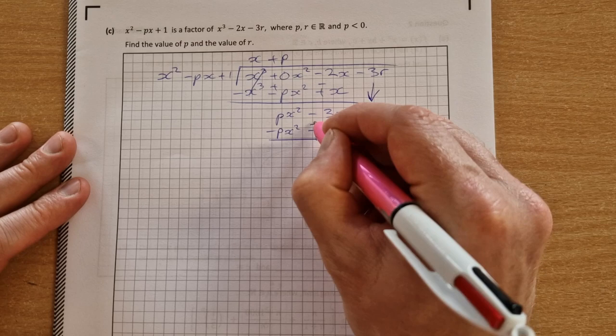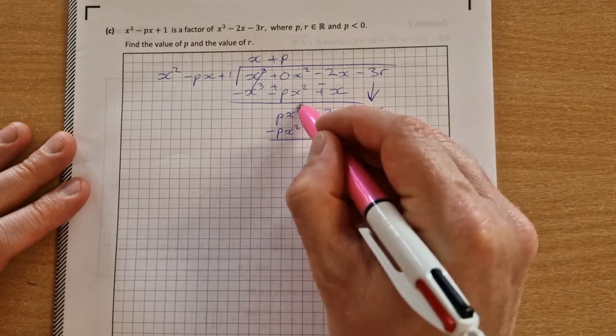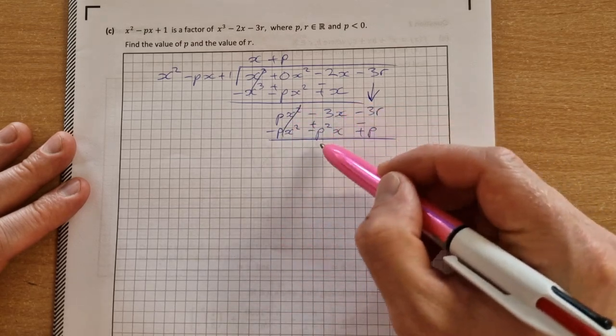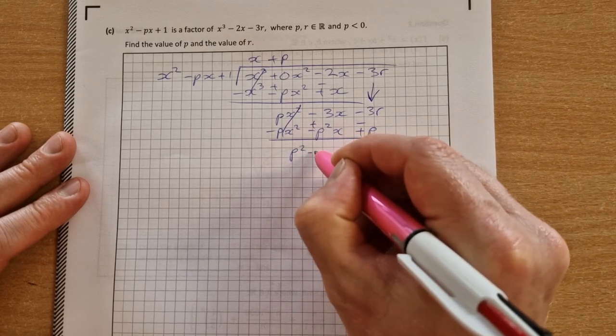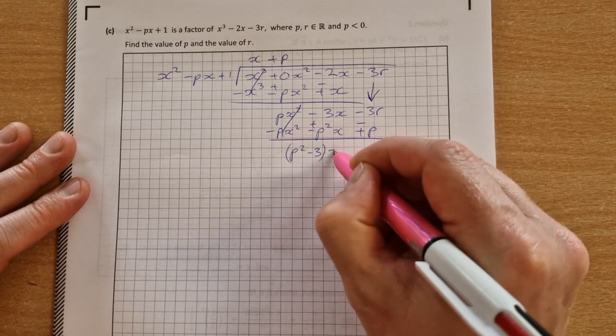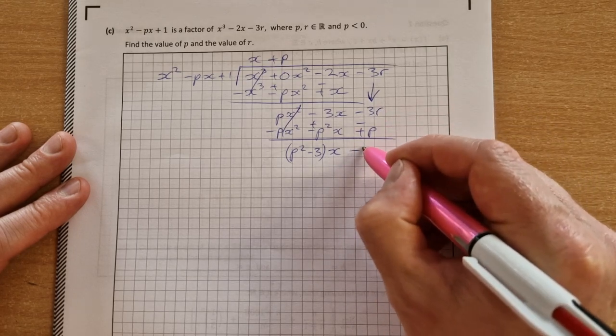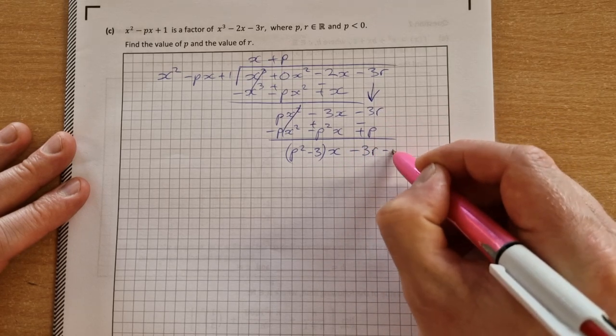Change the signs, minus, plus, minus, they'll cancel. Minus 3x plus p squared x, the way you'll write that is p squared minus 3 in brackets times x, and then here we just have minus 3r minus p.